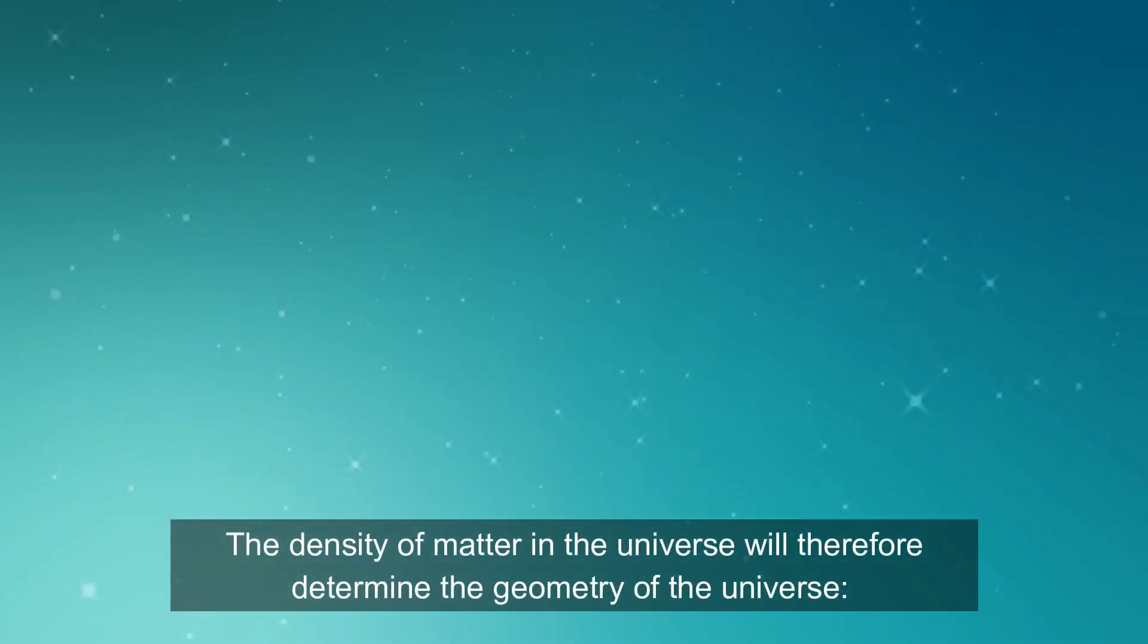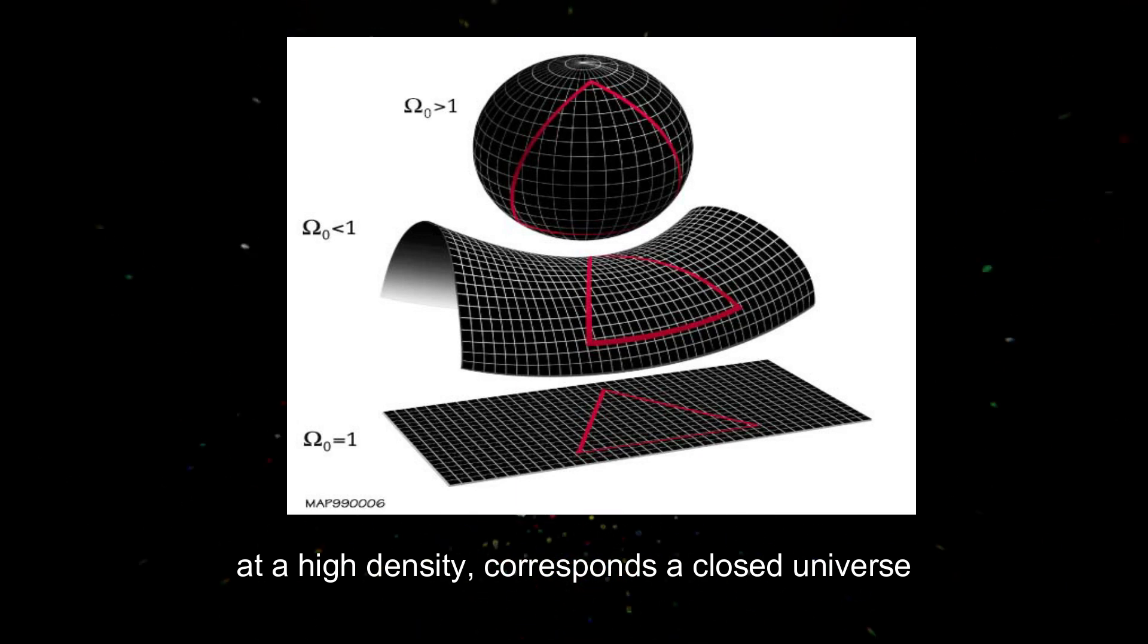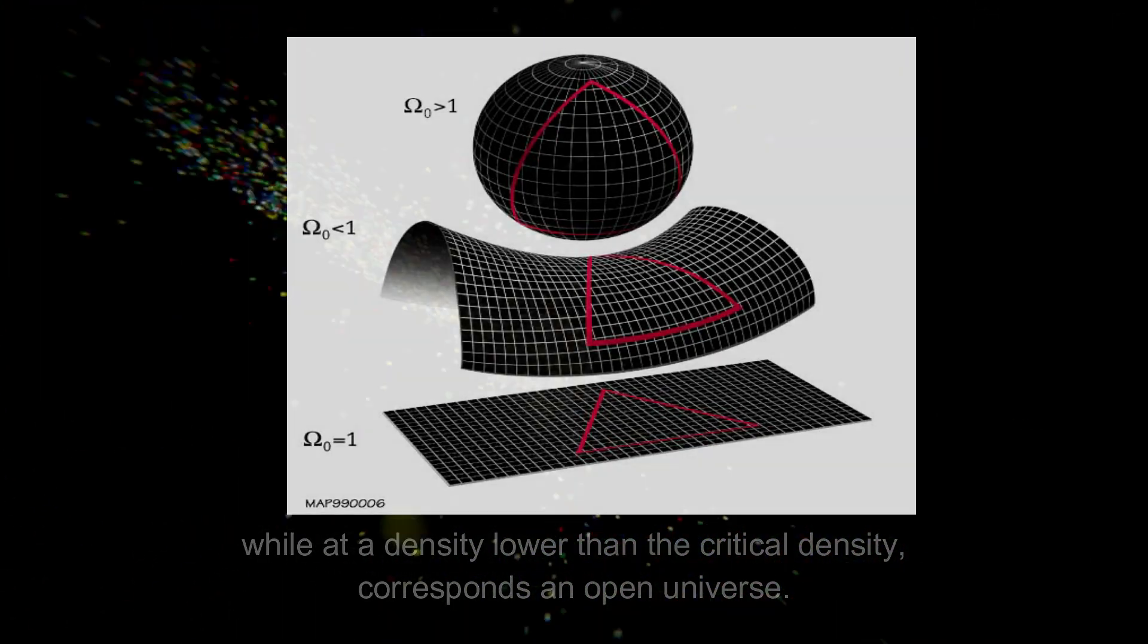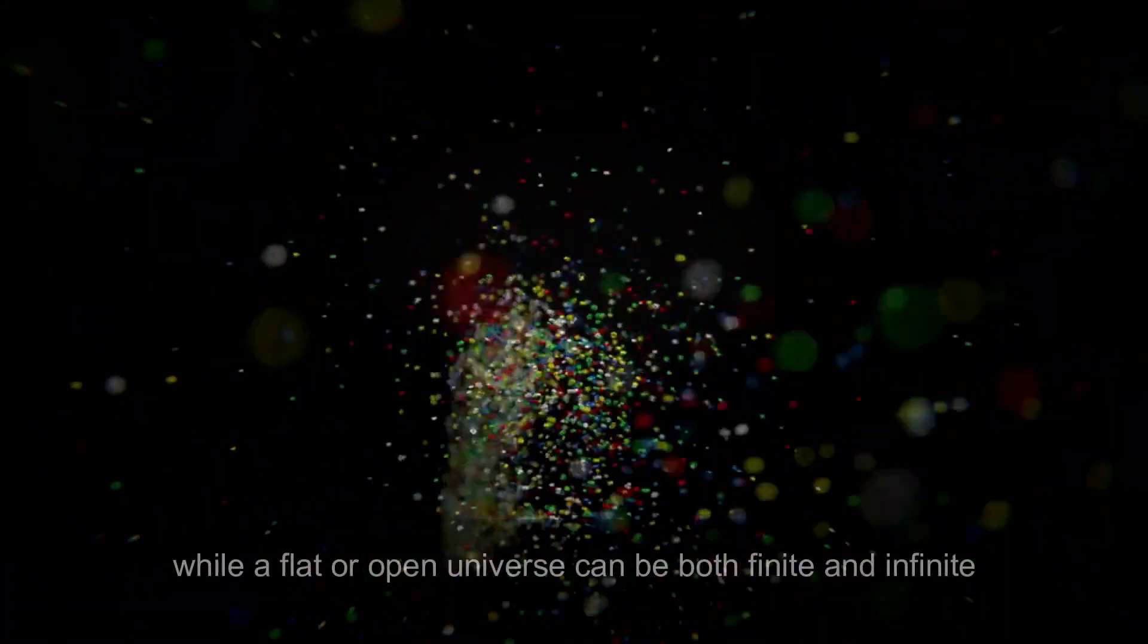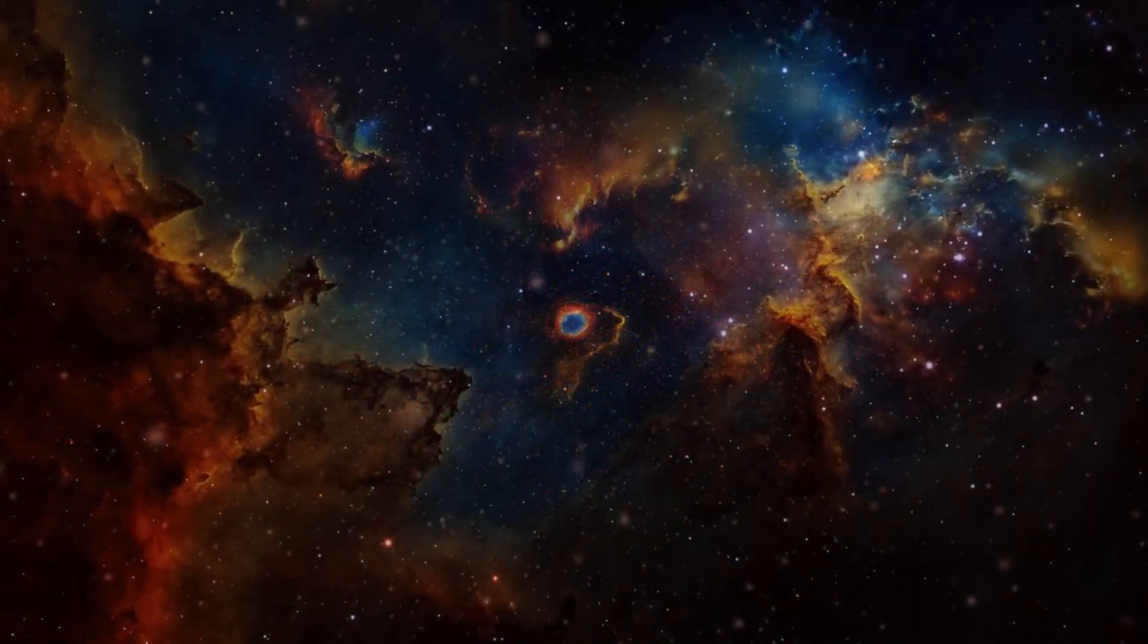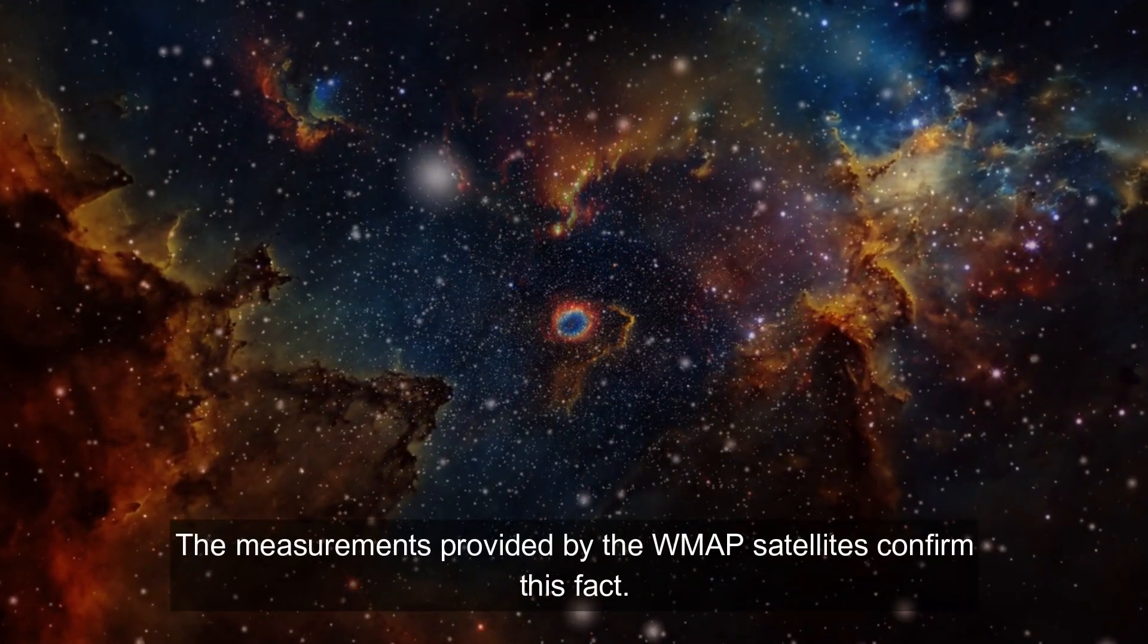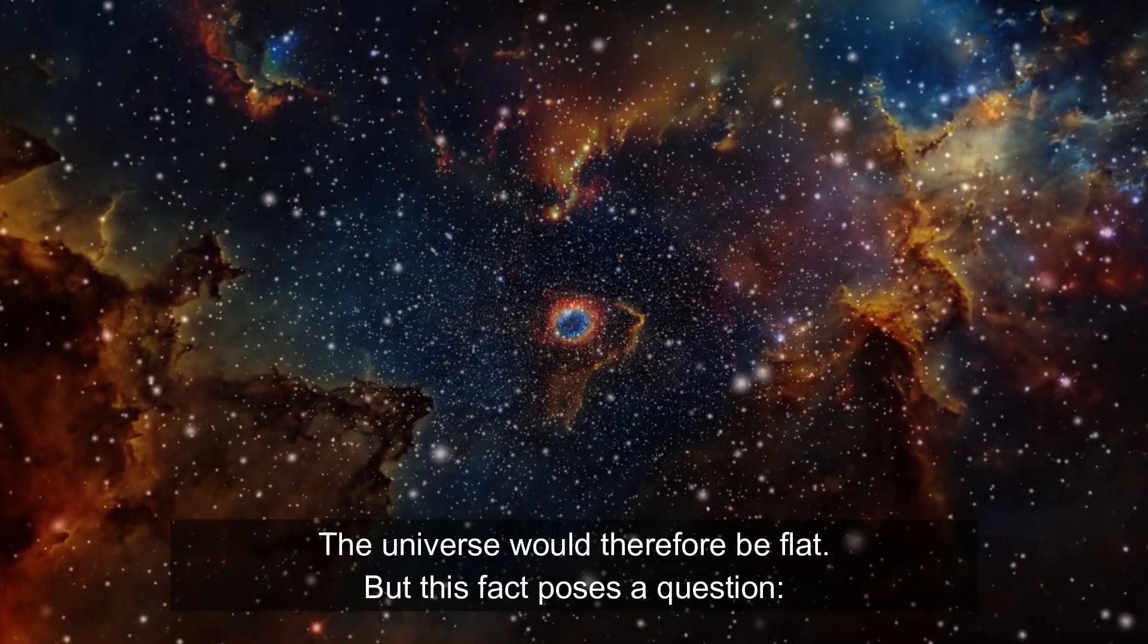The density of matter in the universe will therefore determine the geometry of the universe. At a high density corresponds a closed universe, while at a density lower than the critical density corresponds an open universe. Note that a closed universe is necessarily of finite size, while a flat or open universe can be both finite and infinite. All the measurements that have been made so far were not able to highlight the curvature of the universe. The measurement provided by the WMAP satellites confirmed this fact. The universe would therefore be flat.